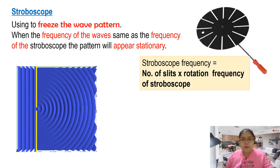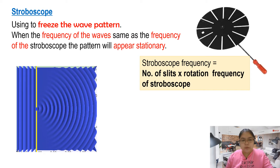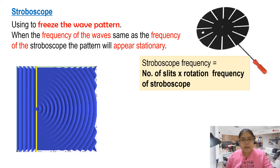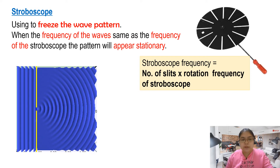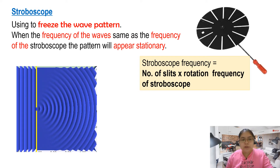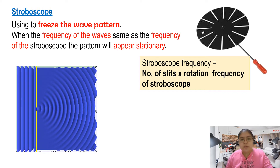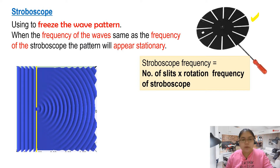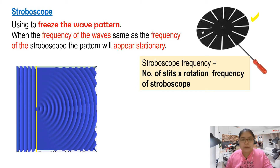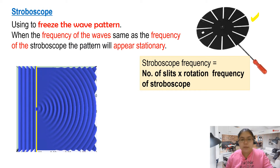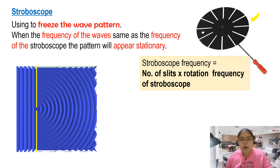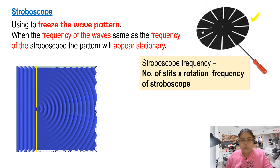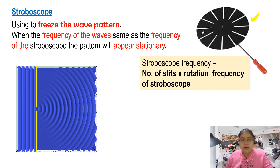Then we go through the stroboscope. The stroboscope must be together with the ripple tank, when we are using the ripple tank. Why must we mention the stroboscope? The function of the stroboscope is to freeze the water pattern. Can you see the water pattern? They keep moving, keep vibrating. So like this, we cannot measure the wavelength. So we use the stroboscope to freeze it.